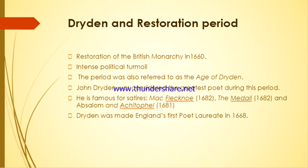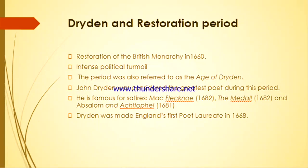I would like to start off with a short introduction to the Restoration Period. This is the period when the British monarchy was reinstated — in 1660, to be precise. The period was marked by intense political turmoil. In terms of literature, it was referred to as the Age of Dryden, because John Dryden was considered the greatest poet of this period. He was a famous satirist, and due to his mastery, Dryden was made England's first poet laureate in 1668.